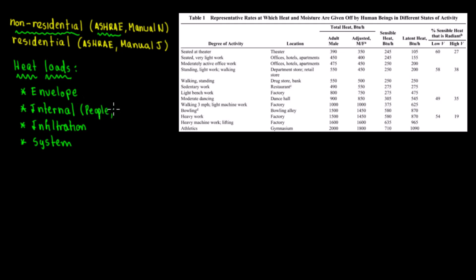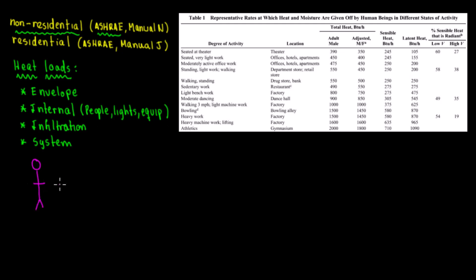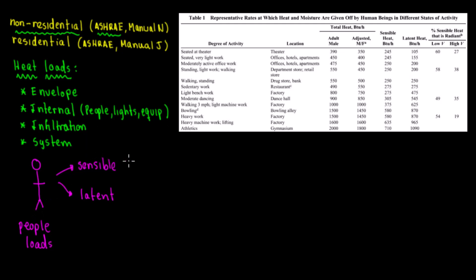This video is about internal loads specifically. For internal loads we have people, lights, and equipment and appliances. For people, what happens depends on the activity, but we're going to have two types of heat: number one is sensible heat and number two is latent heat — this is the people load.